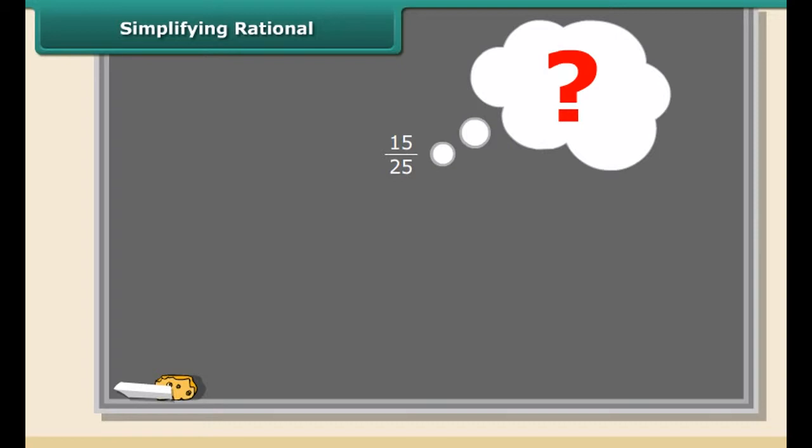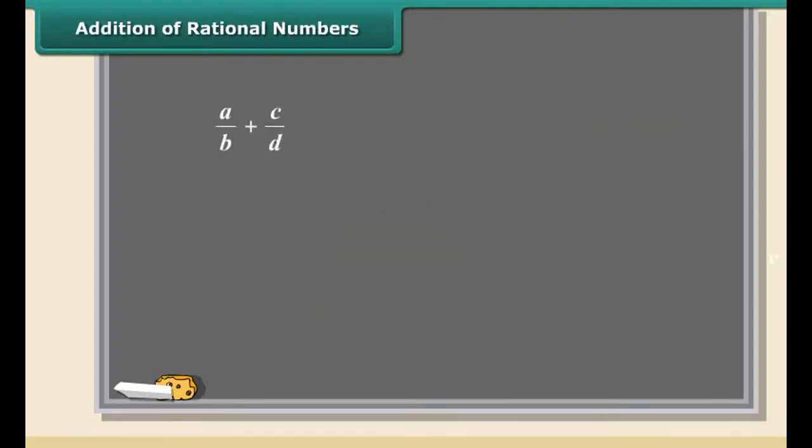Sometimes the rational number can be like that. Do you think that it is in simplified form? No, it can be further simplified. But how? Here we can divide the numerator and denominator by 5 to get 3 by 5. This is the simplest form. So students, remember we can simplify the fraction by dividing the numerator and denominator by a common factor.